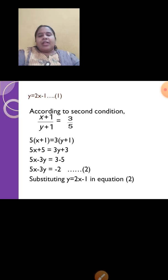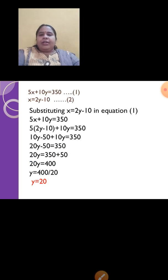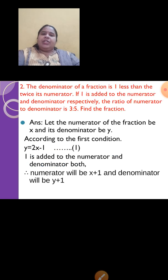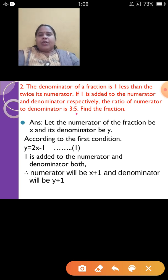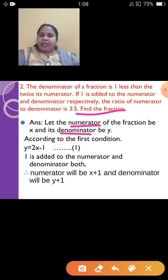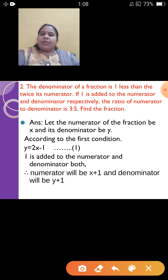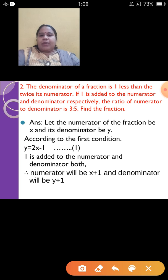Let us move to the second sum. The denominator of a fraction is 1 less than twice its numerator. If 1 is added to the numerator and denominator respectively, the ratio of numerator to denominator is 3 is to 5. Find the fraction. From the last part — 'find the fraction' — we know there are two quantities: numerator and denominator. So let the numerator be x and the denominator be y.